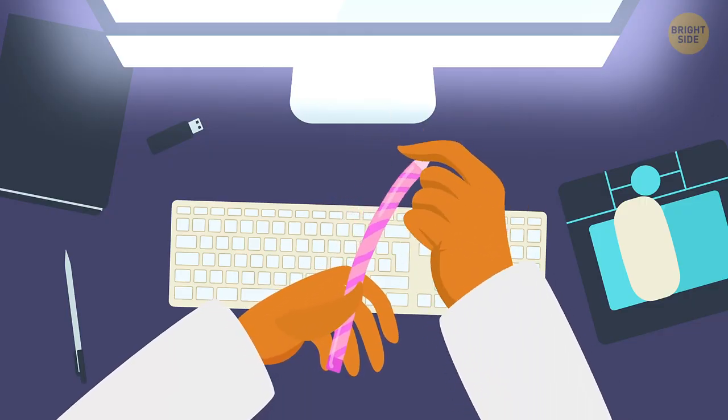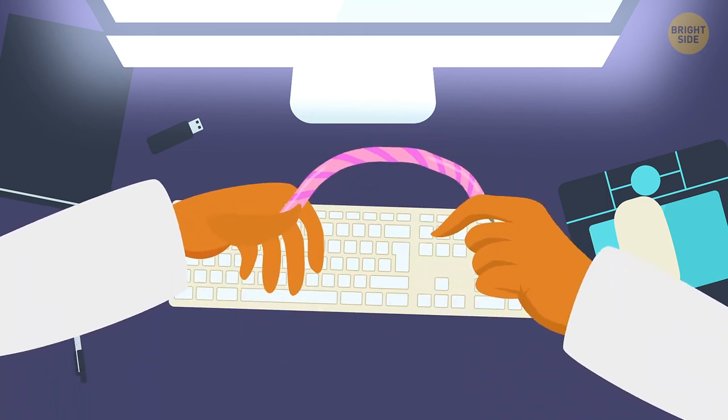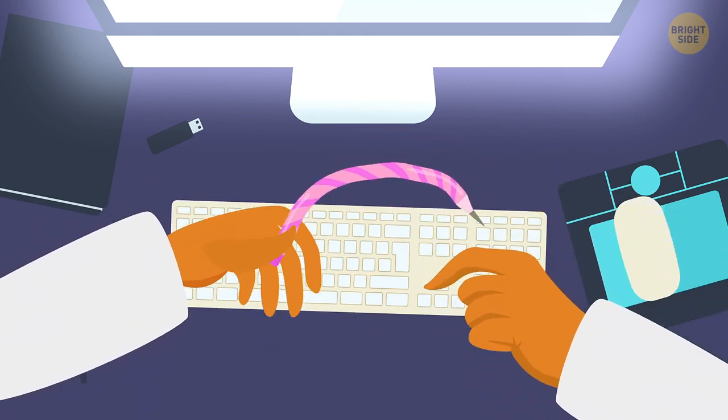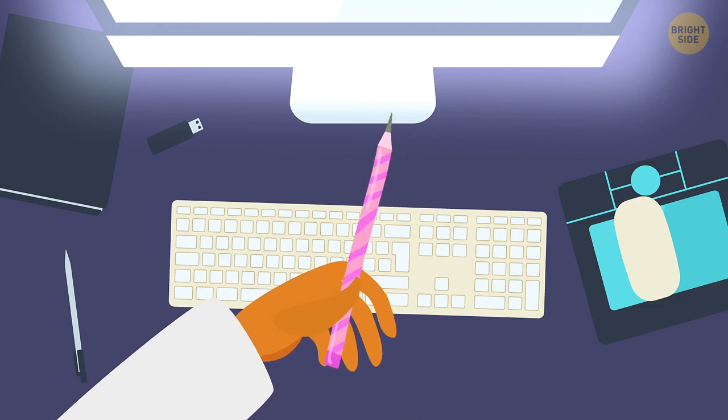Remember those bendy pencils? Twist them, tie them in a knot, bend them. They always go back to their original shape. That's what you'd need for your arms and legs.